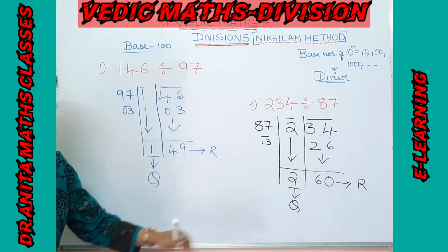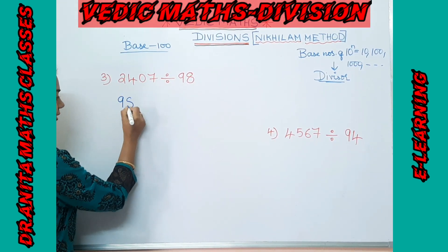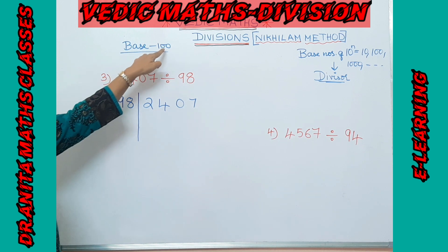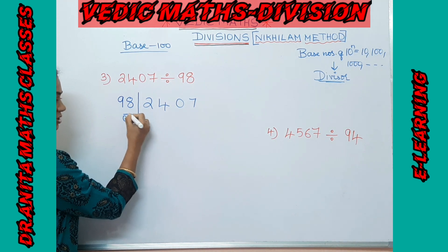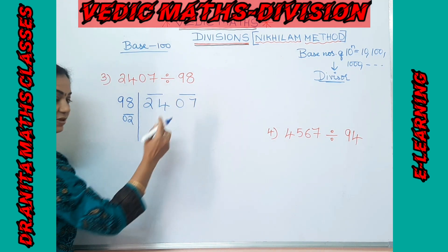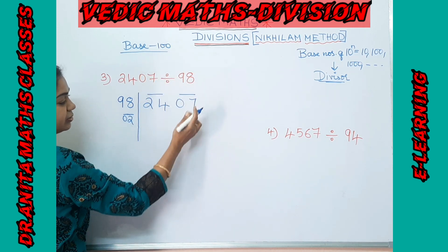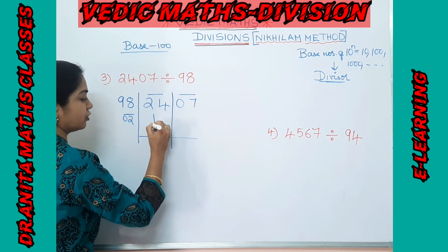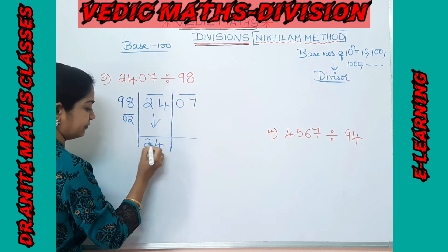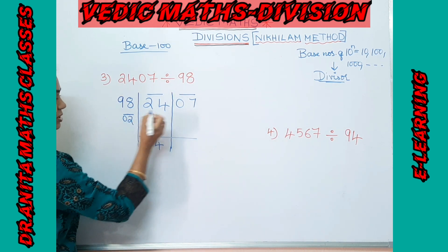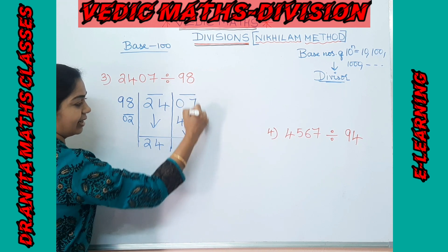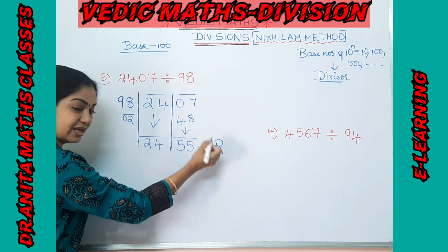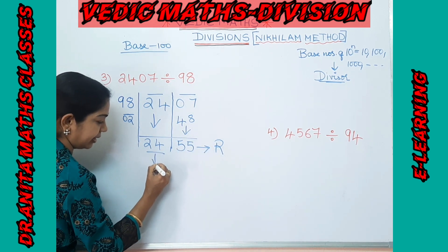Next: 22407 ÷ 98. The complement of 98 is 02. Since it's near base 100, partition two digits from the right — grouping into two-digit sets. Drop the first group as it is: 24. Multiply 24 by 2 to get 48; add to the next group: 07 + 48 = 55. Since 55 < 98, the final remainder is 55 and the quotient is 24.